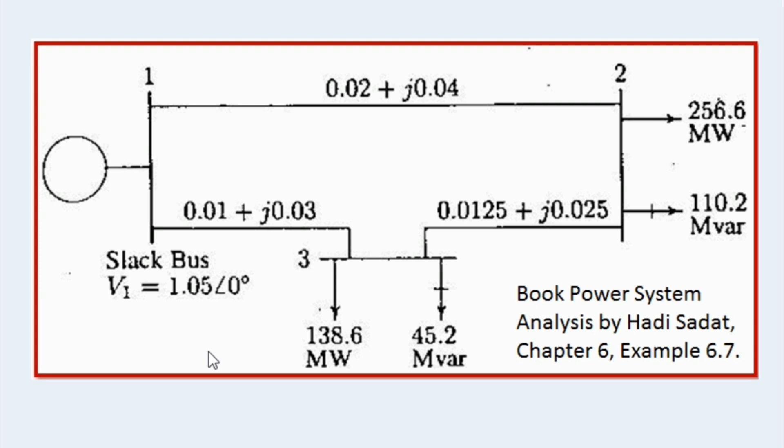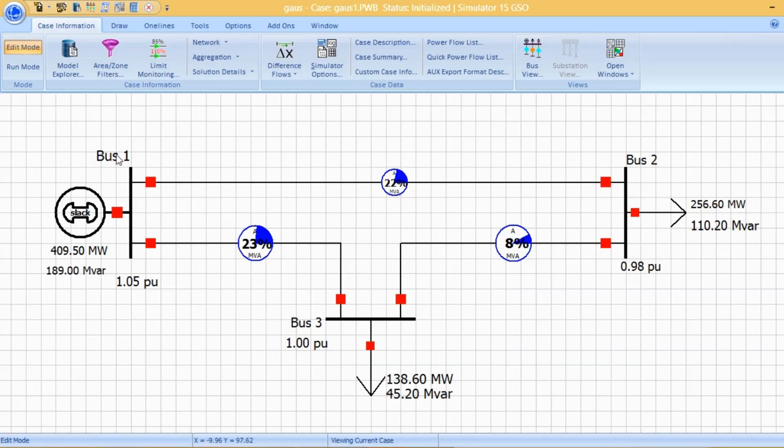So I have already designed this system in PowerWorld Simulator as shown here. You can see the system consists of three buses. Their impedances are already given in the transmission lines. Now we can determine the admittance matrix for this purpose.